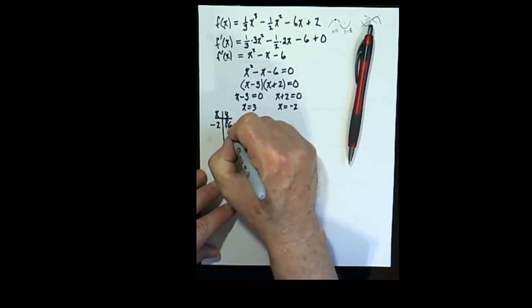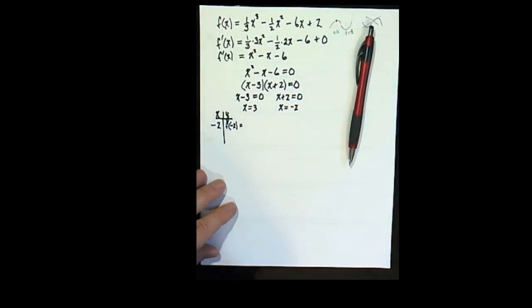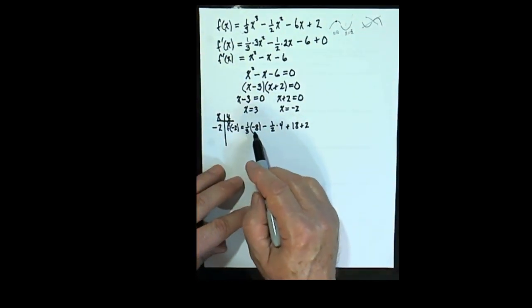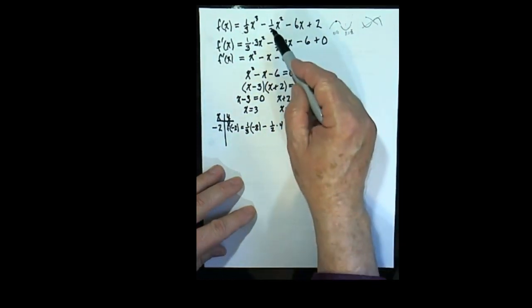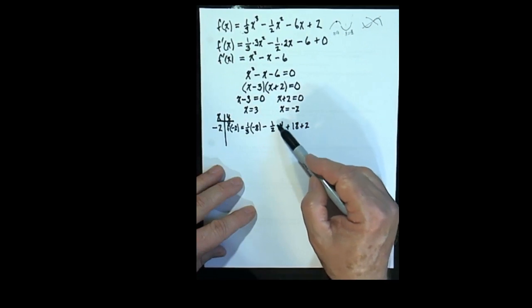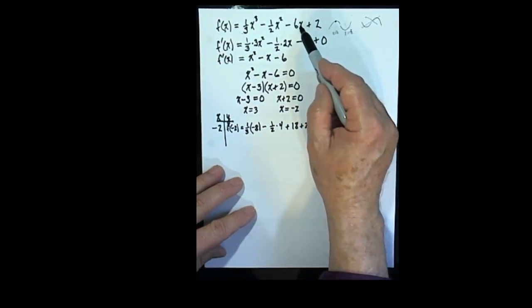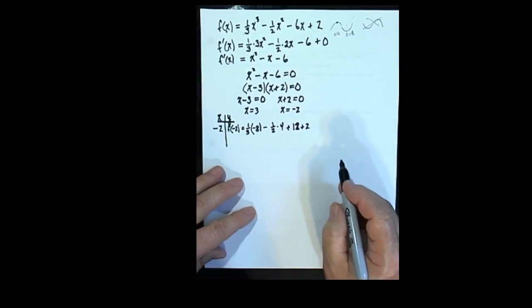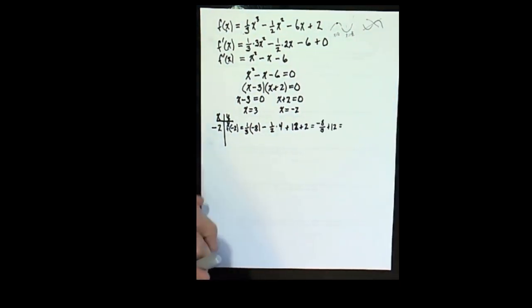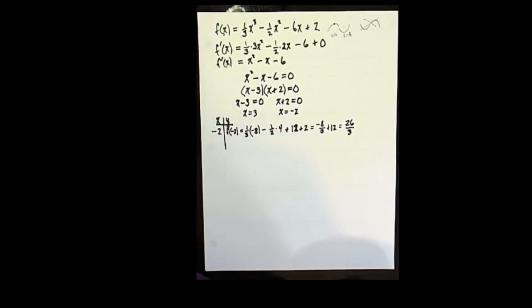So we want to know that point right there on the function. When x is equal to negative 2, then y is going to be found by looking at the function at negative 2. So that means one third times negative 8, because negative 2 cubed will be negative 8, minus one half times negative 2 squared will be 4, minus 6 times negative 2 is going to be positive 12 plus 2. Which is negative 8 thirds plus 12. Let's get a common denominator and add that up.